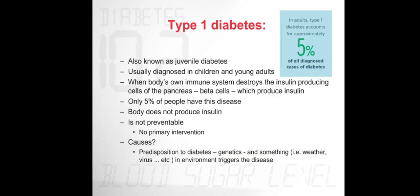Type 1 diabetes is also known as juvenile diabetes, usually diagnosed in children and young adults. It happens when the body's own immune system destroys the insulin-producing beta cells of the pancreas. Only 5% of people have this form, which produces no insulin. It is not preventable and there is no primary intervention.